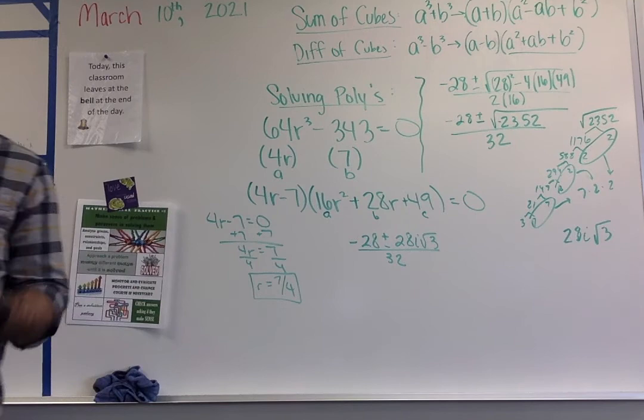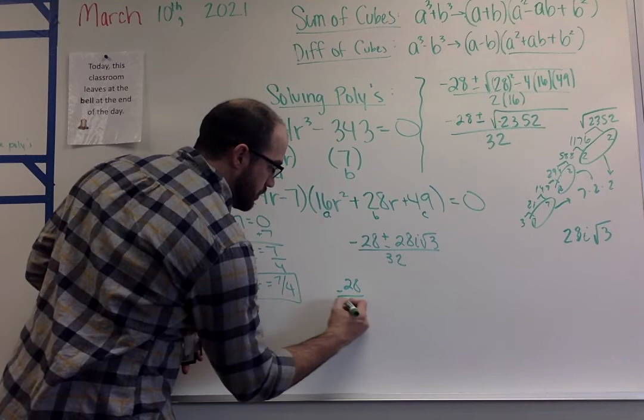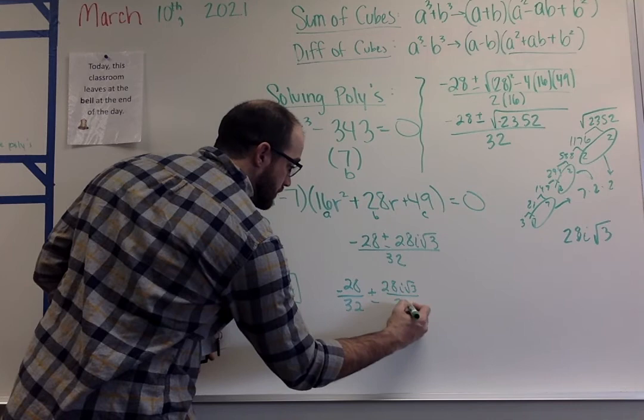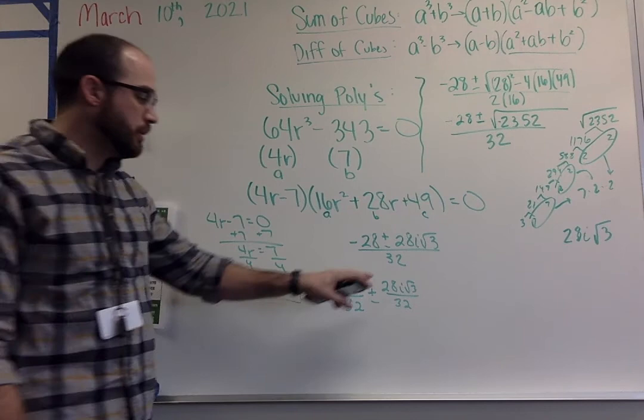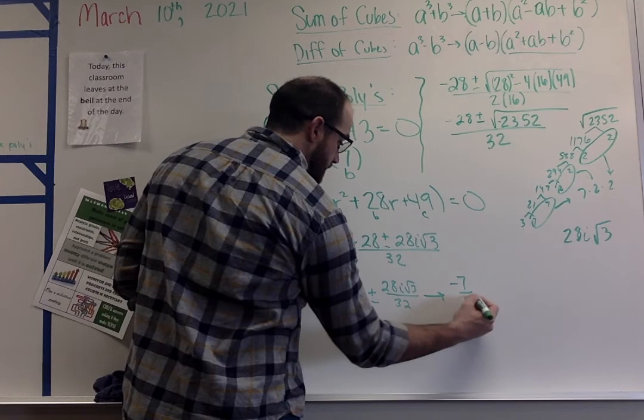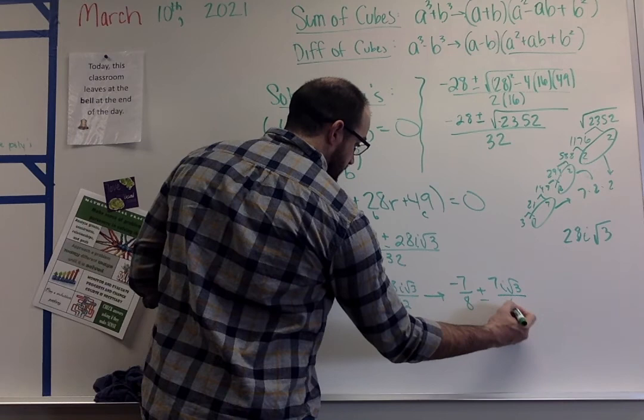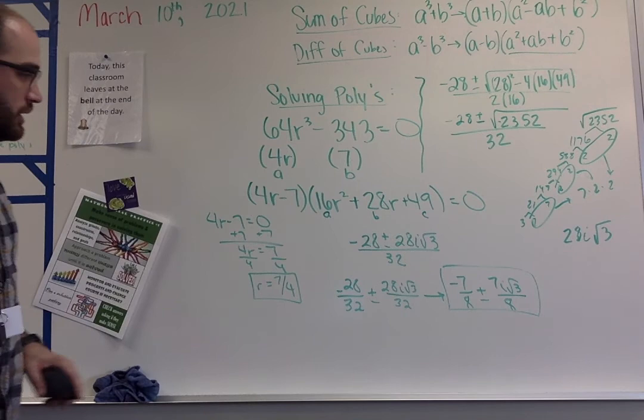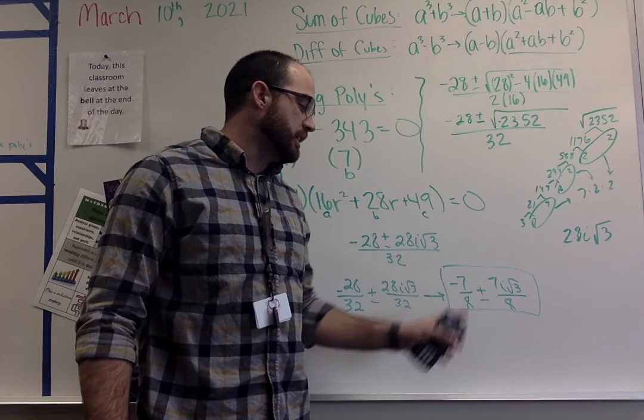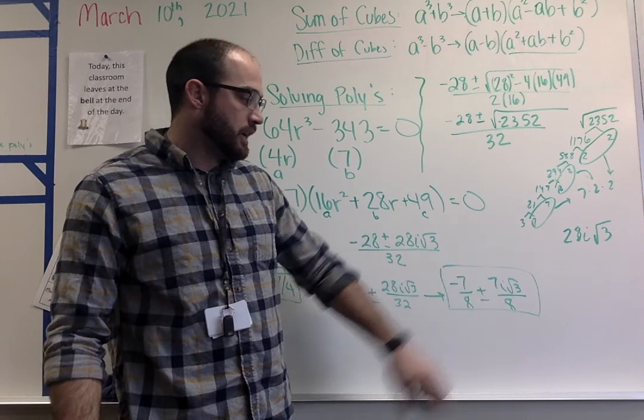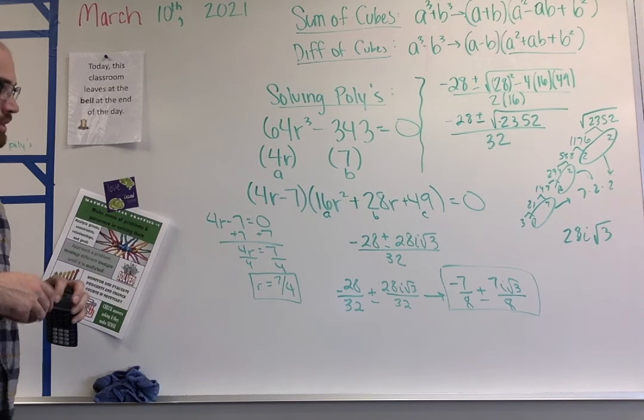I encourage you to split this up as two fractions to simplify. So I can say -28/32 ± 28i√3/32. This one, because they're both 28s, ends up factoring a little bit easier. You can divide both top and bottom by 4. So my final answer then is -7/8 ± 7i√3/8. I have one answer here, one solution here. This one is technically two solutions because I have that plus or minus. So one solution is -7/8 + 7i√3/8, and the other one is -7/8 - 7i√3/8. You can leave it like that in your answer if you would like.